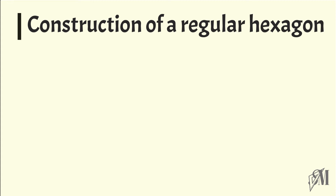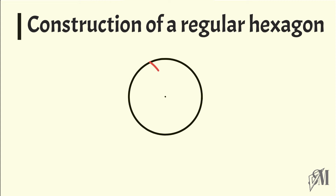Now let's move on to the construction of a regular hexagon. First of all, draw a circle. Without changing the radius in your compass, keep it on any point on the circle and draw an arc. Take your compass to that arc and continue drawing another arc, and draw six arcs like this until you reach the point where you started. You will see that you have divided the circle into six equal arcs. I name these six points as A, B, C, D, E, and F.